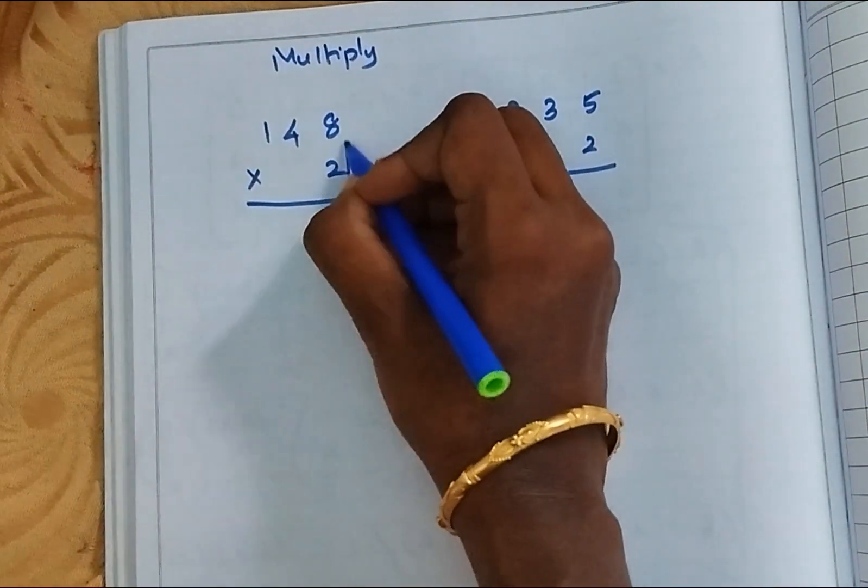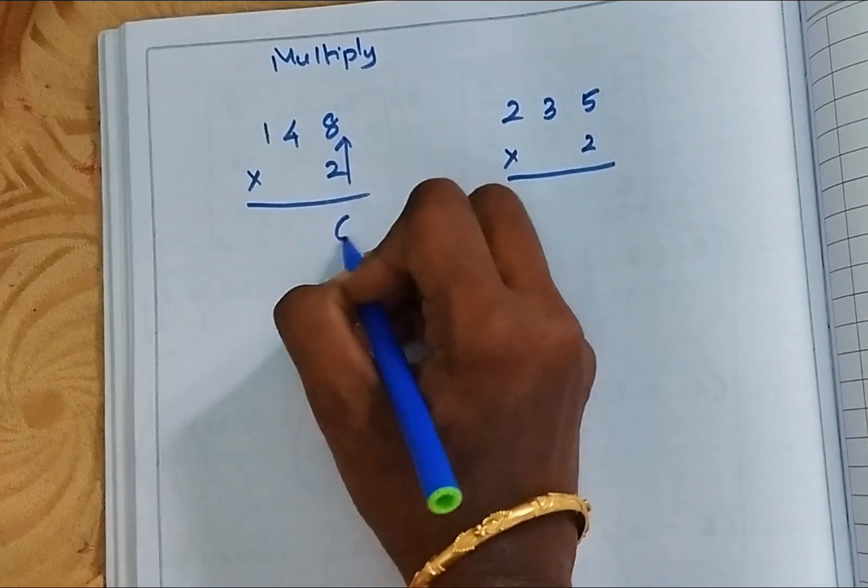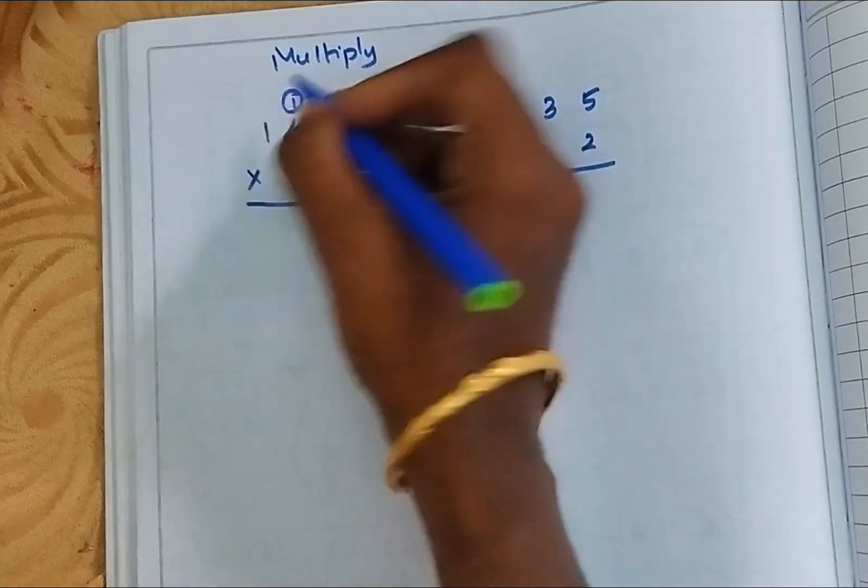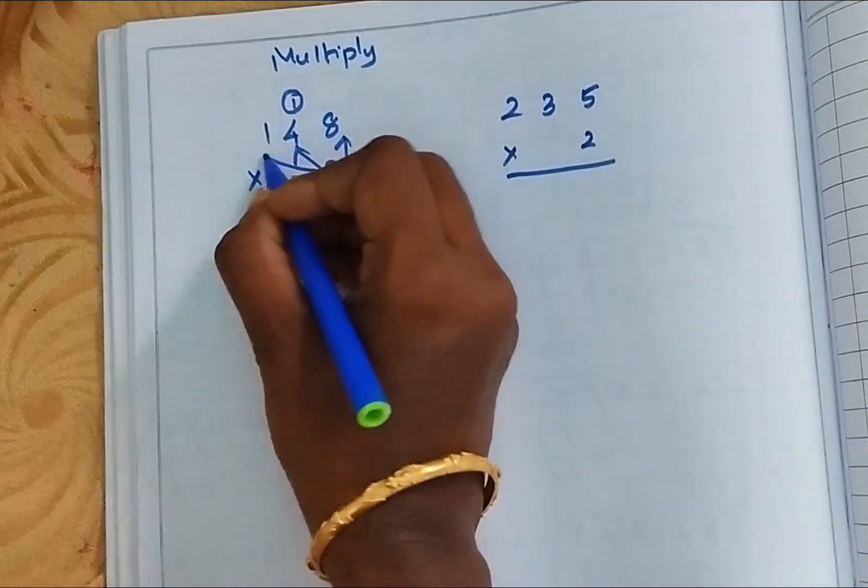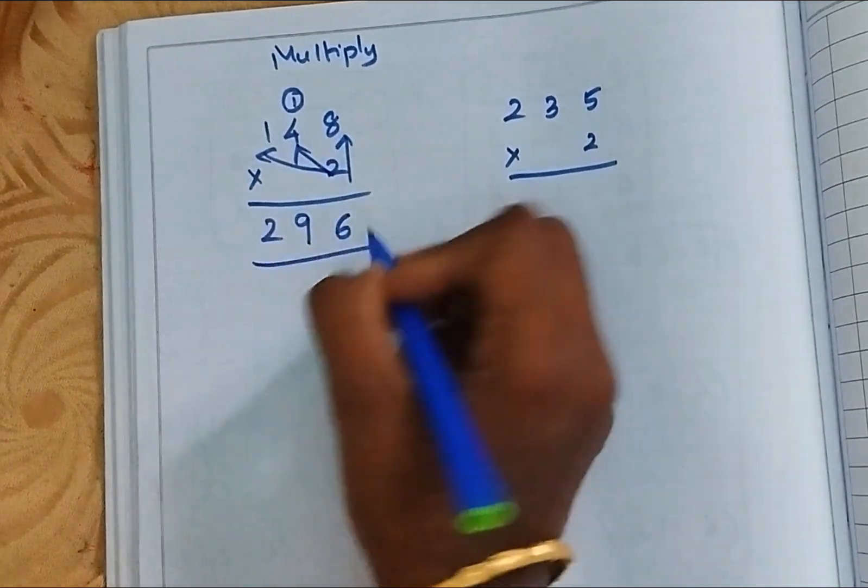So first, always start with ones place. 2 times 8 is 16, so carry over. Next, 2 times 4 is 8, 8 plus 1 is 9. Next, hundreds place, 2 times 1 is 2, the same.